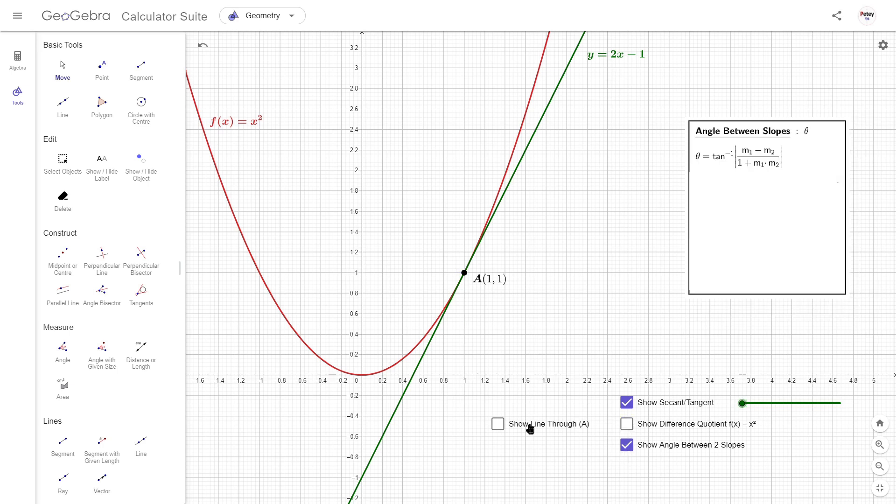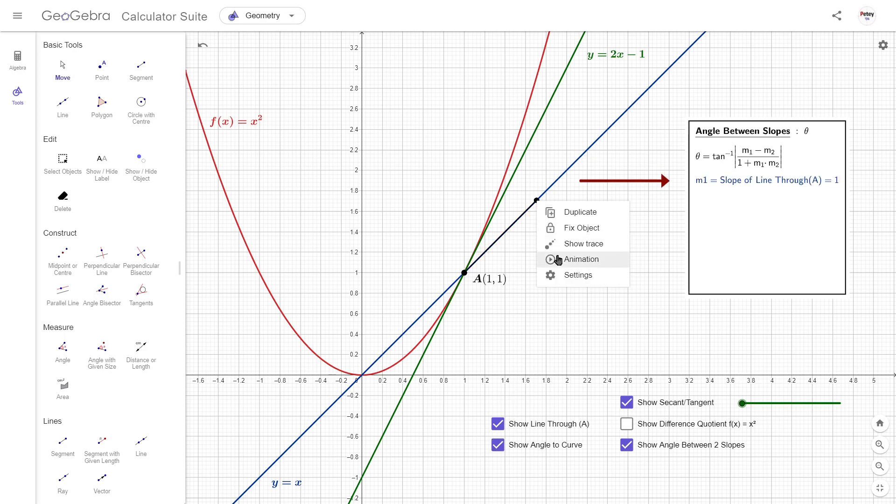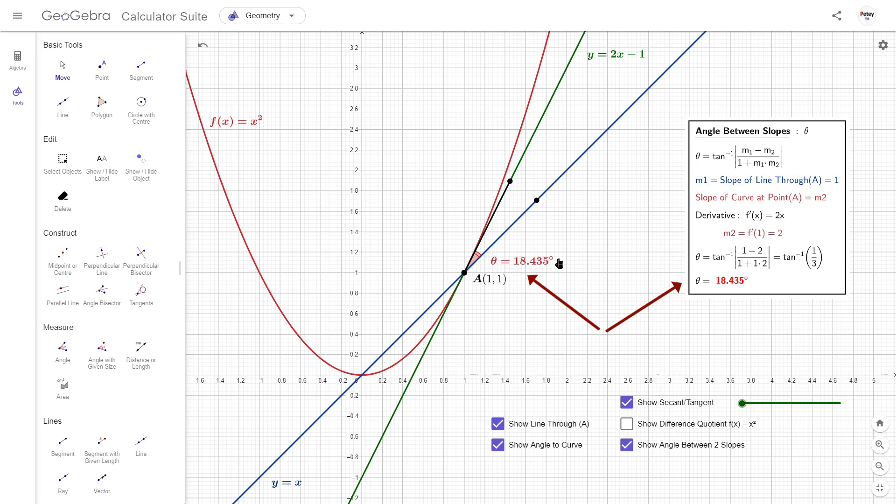Imagine that! To calculate the angle, then, we'll use this formula, where m1 is the slope for the blue line, and m2 is the slope of the curve at point A. Plugging those values in, we can see that our calculation matches the angle measured by the software.